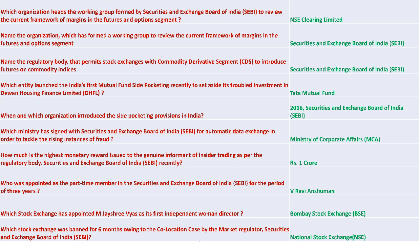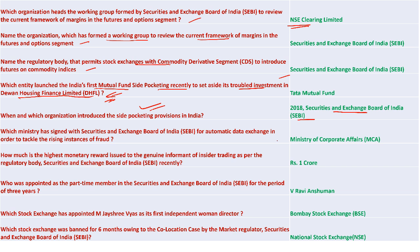NSE Clearing Limited heads the working group formed by SEBI to review the current framework of margin in futures and options. SEBI permits stock exchange commodity derivative to introduce futures on commodity indices. Tata Mutual Fund launched India's first mutual fund side-pocketing to set aside troubled investment in Dewan Housing Finance Limited, allowed under the SEBI Regulations 2018. The Ministry of Corporate Affairs signed with SEBI for automatic data exchange to tackle rising instances of fraud.